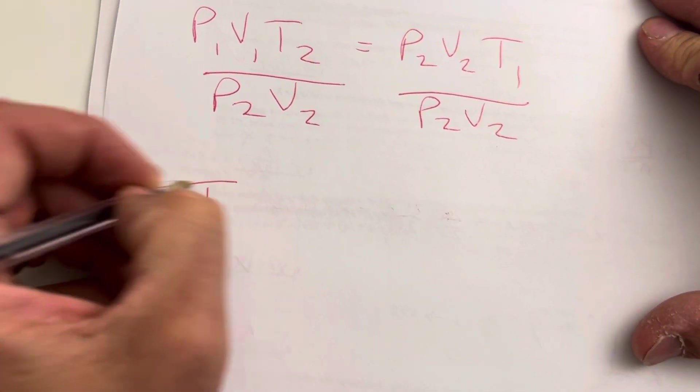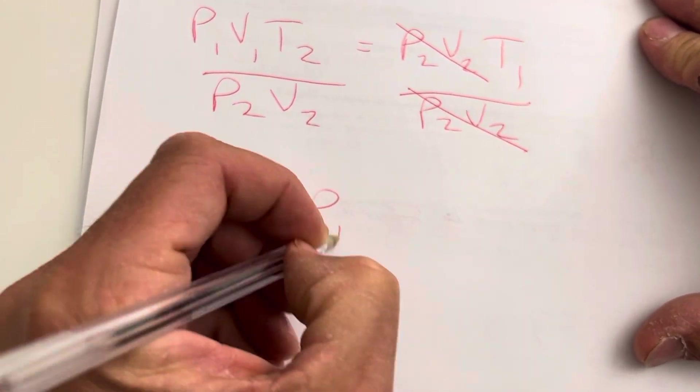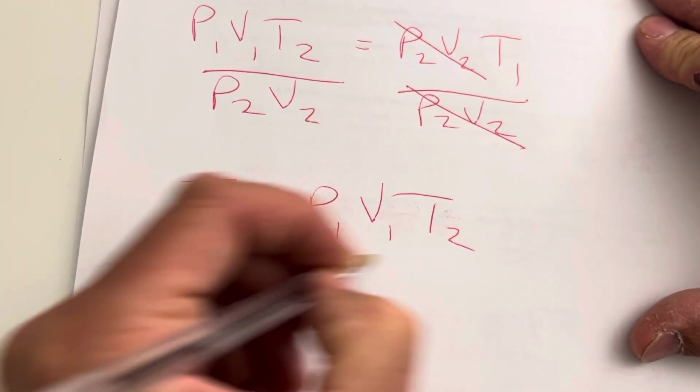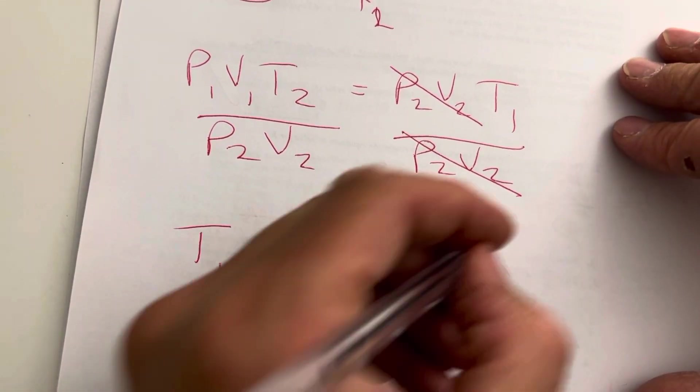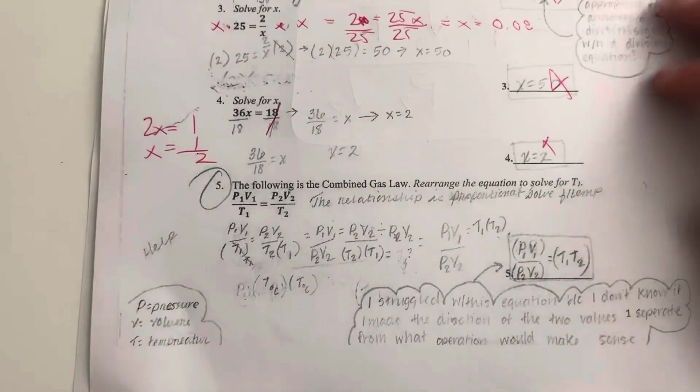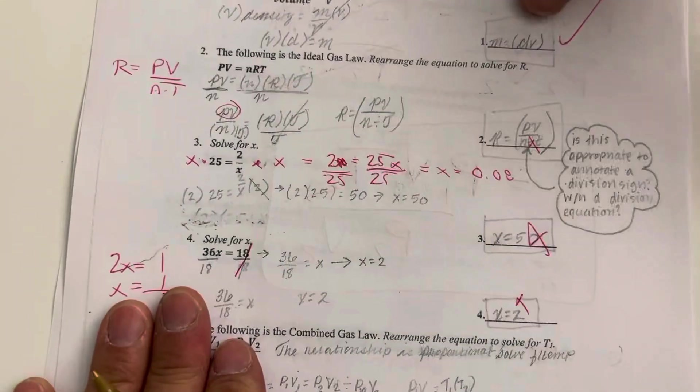And when we do that, we get T1, because all of this cancels out. T1 is equal to P1 times V1 times T2 divided by P2 times V2. So that's the solution here for that one. So this one, again, you want to look at that solution that I posted or that I just gave you.